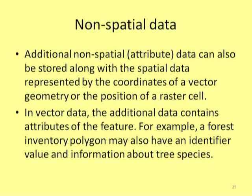Both raster and vector are spatial data which have presence in space with X, Y, Z coordinates. Certain things are not spatial data — they are just information about spatial items, called non-spatial data. For example, how many rooms a particular hospital or building has, the number of beds in a hospital, number of classrooms in a school, or number of branches in your engineering college — these are all non-spatial data, but the college itself is spatial data. Non-spatial data can be attached to spatial data and that information can be brought onto the map or in form of tables.